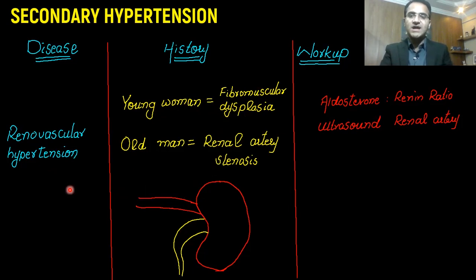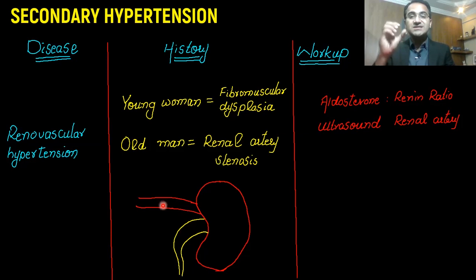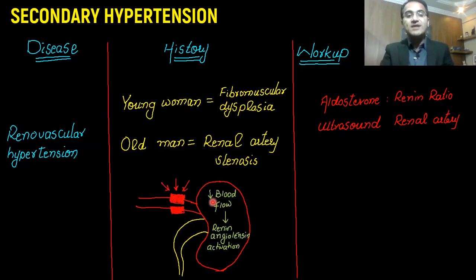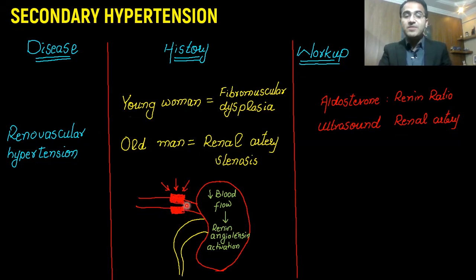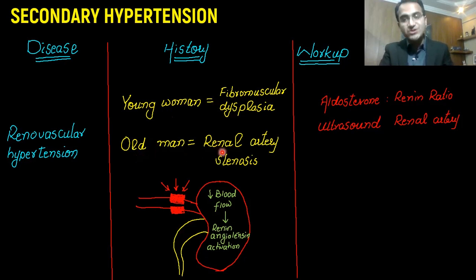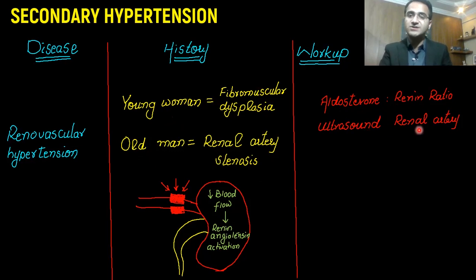Renovascular hypertension is a very important cause of secondary hypertension. The problem lies within the arteries supplying the kidneys. When these arteries are thickened or constricted, low blood flow to the kidneys causes activation of the renin-angiotensin system, which releases angiotensin — increasing blood pressure — and aldosterone, increasing salt retention. In a young woman, suspect fibromuscular dysplasia as the cause of vessel thickening. In an older man, suspect renal artery stenosis. Workup includes aldosterone-renin ratio and ultrasound of the renal artery to look for stenosis.